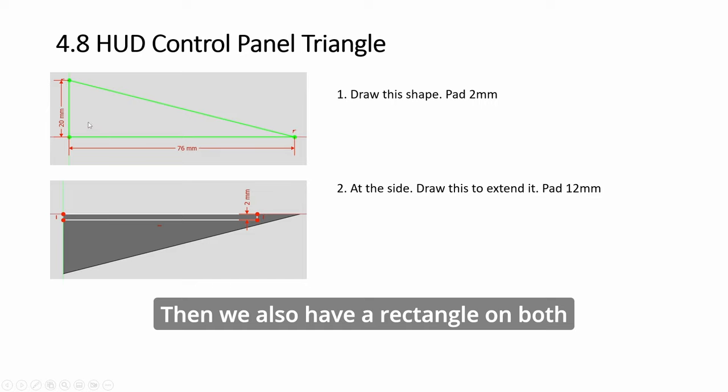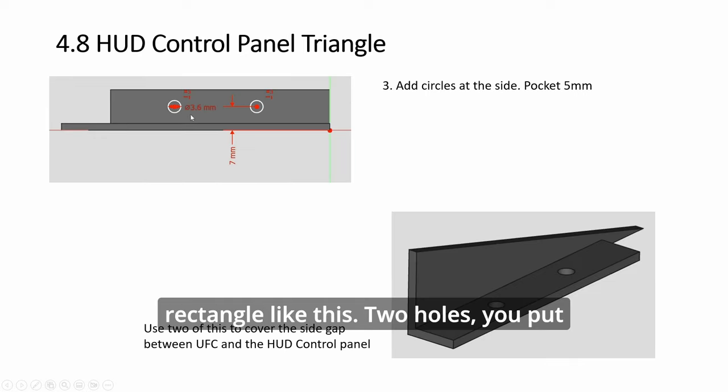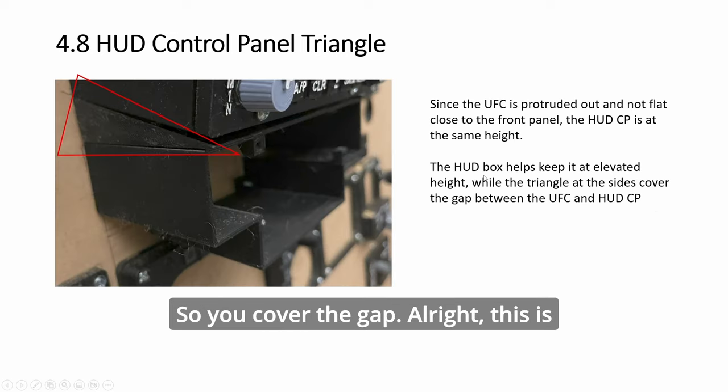Okay? Then we also have a rectangle on both sides to cover. I'll show in a second. So the way I mounted it, there's a gap. So I'm building this rectangle like this. Two holes. You put it flush. This will sit on top of your control panel, the HUD control panel. And you put two screws here. So you cover the gap. Alright? This is how it looks like.